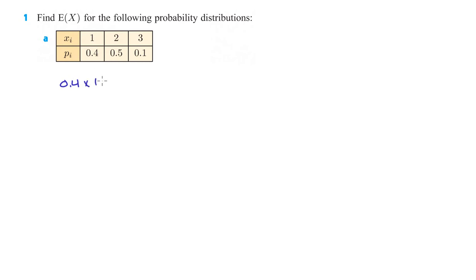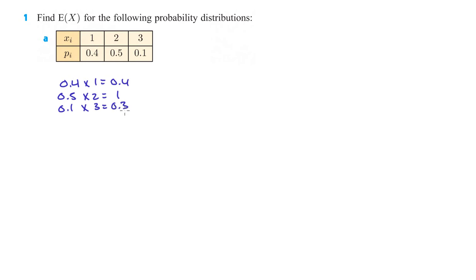So I'm going to do 0.4 times 1, which gives us 0.4. And then 0.5 of the time our expected value is 2, so 0.5 times 2 gives us 1. And then 0.1 of the time we're expected to get 3, so 0.1 times 3 is 0.3. If we add those all up we get 1.7.